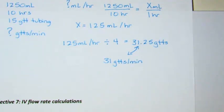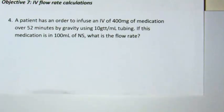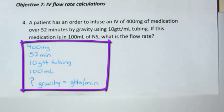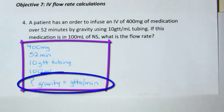In this last objective 7 problem, number 4, a patient has an order to infuse an IV of 400 milligrams of medication over 52 minutes by gravity using 10 drop per milliliter tubing. If this medication is in 100 milliliters of normal saline, what is the flow rate? In the toolbox, we have 400 milligrams, 52 minutes of infusion time, 10 drop tubing, 100 milliliters of volume, and the question is asking for an IV flow rate.